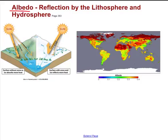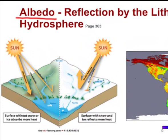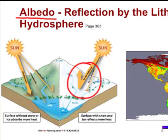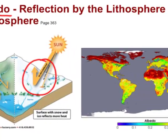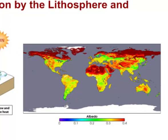Another word to introduce is albedo, which means reflection by the lithosphere. If you look at this diagram, you can see that a snow-covered surface is nice and white and reflective — sometimes when you're skiing you need goggles to shield yourself from the intense reflection off the snow. If you have a high albedo or high reflectivity, a lot of the Sun's radiation bounces right off and you don't absorb much energy, meaning less energy for things to grow and develop. Albedo has a huge effect on who can live where, on both the lithosphere and the hydrosphere.